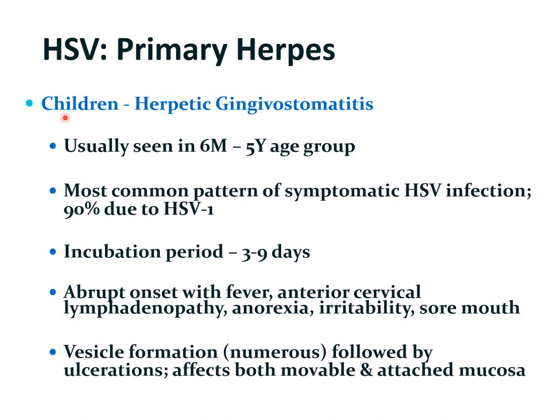In children, the most common pattern is herpetic gingivostomatitis — inflammation involving the gingival and oral soft tissues. It is usually seen in young children from 6 months to 5 years of age and is the most common pattern of symptomatic herpes simplex virus infection; 90% of cases are due to type 1 herpes simplex virus. The incubation period is 3 to 9 days and is characterized by abrupt onset of fever with cervical lymphadenopathy, anorexia, irritability, and sore mouth.